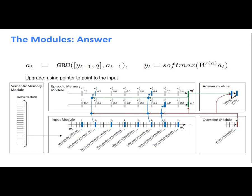The answer module takes the final memory state and outputs a word at a time using softmax. One upgrade is using a pointer mechanism — if a word is not in the dictionary, softmax cannot produce it, so instead you point to the input sentence and copy the exact word directly to the answer module.